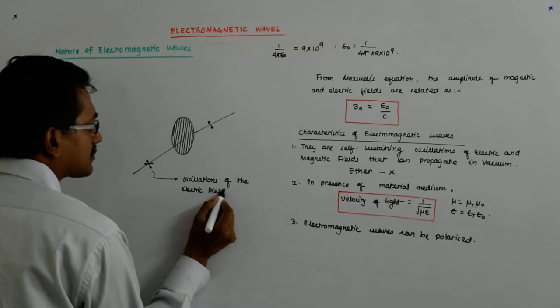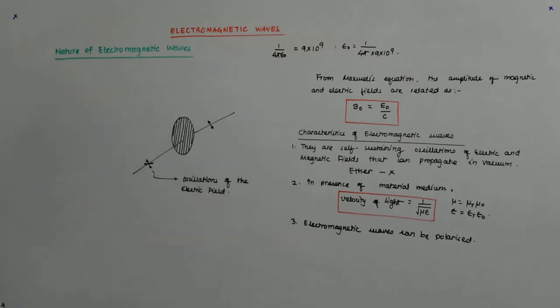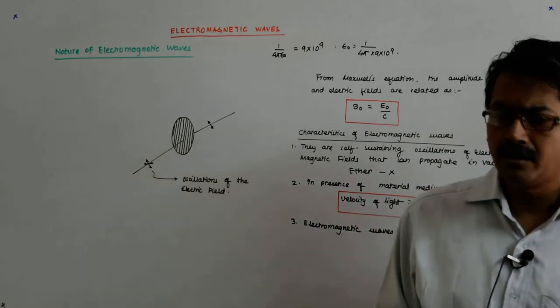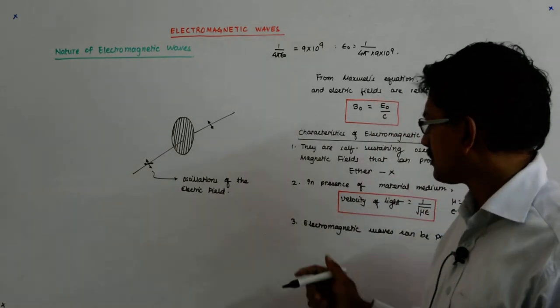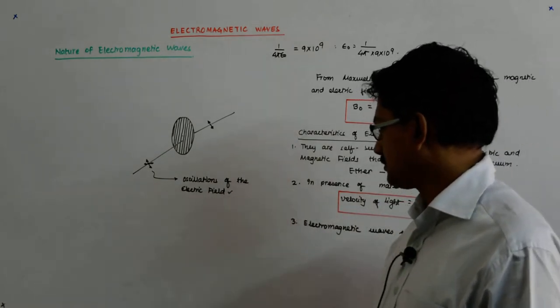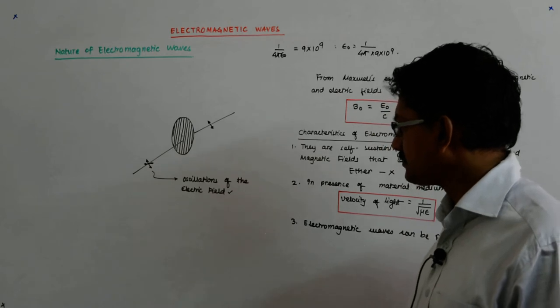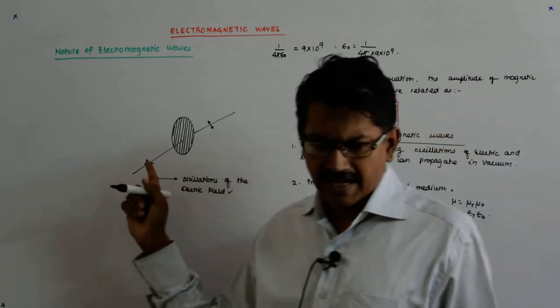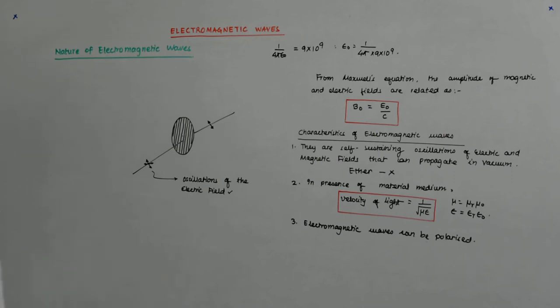We are showing actually the oscillations of the electric field, not the magnetic field. The oscillations of the electric field are shown like this, and they are polarizable.